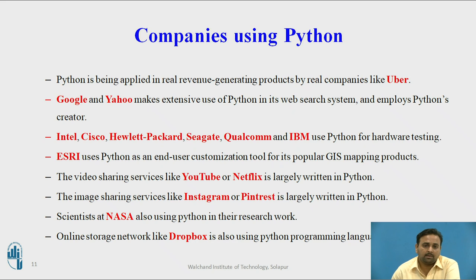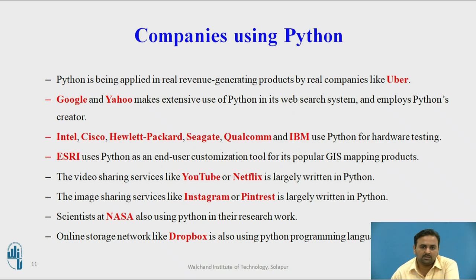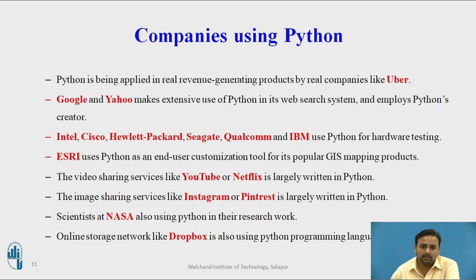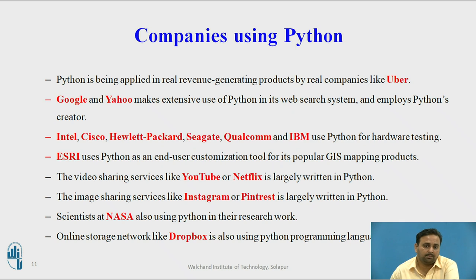A lot of MNCs are using Python. The biggest ones include Google, Yahoo — and if Google and Yahoo are using your programming language, it is a hallmark that it is the best. Intel, Cisco, HP, Seagate, Uber, Instagram, and YouTube are also using it. Image sharing and video sharing services use Python too. One more hallmark is that scientists at NASA also use Python for their research work. That itself says enough about this programming language.